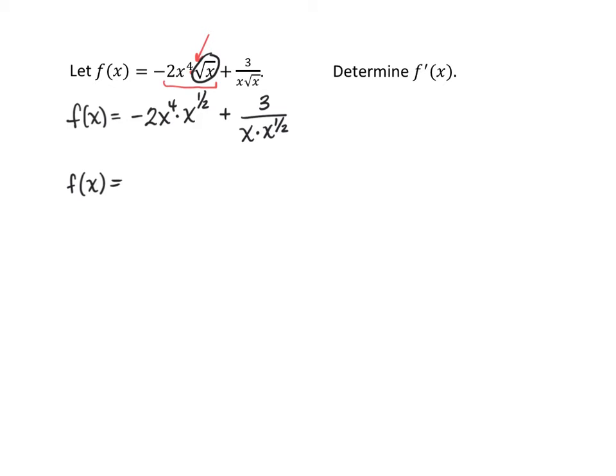When we multiply x^4 times x^(1/2), we add those exponents. So we'll have -2 and then 4 + 1/2. Be careful with fractions - that's going to end up being 9/2. So -2x^(9/2).